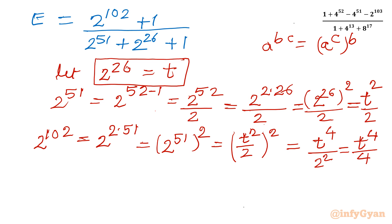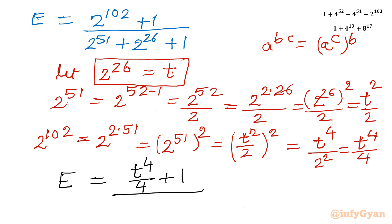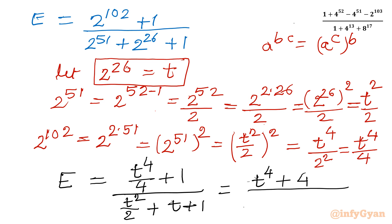Let us rewrite our expression in terms of t. The expression E becomes: t power 4 over 4 plus 1 in the numerator, divided by t squared over 2, plus t, plus 1 in the denominator. Multiplying numerator and denominator by 4, I can write finally: t raised to the power 4 plus 4, divided by 2 times t squared plus 2t plus 2.